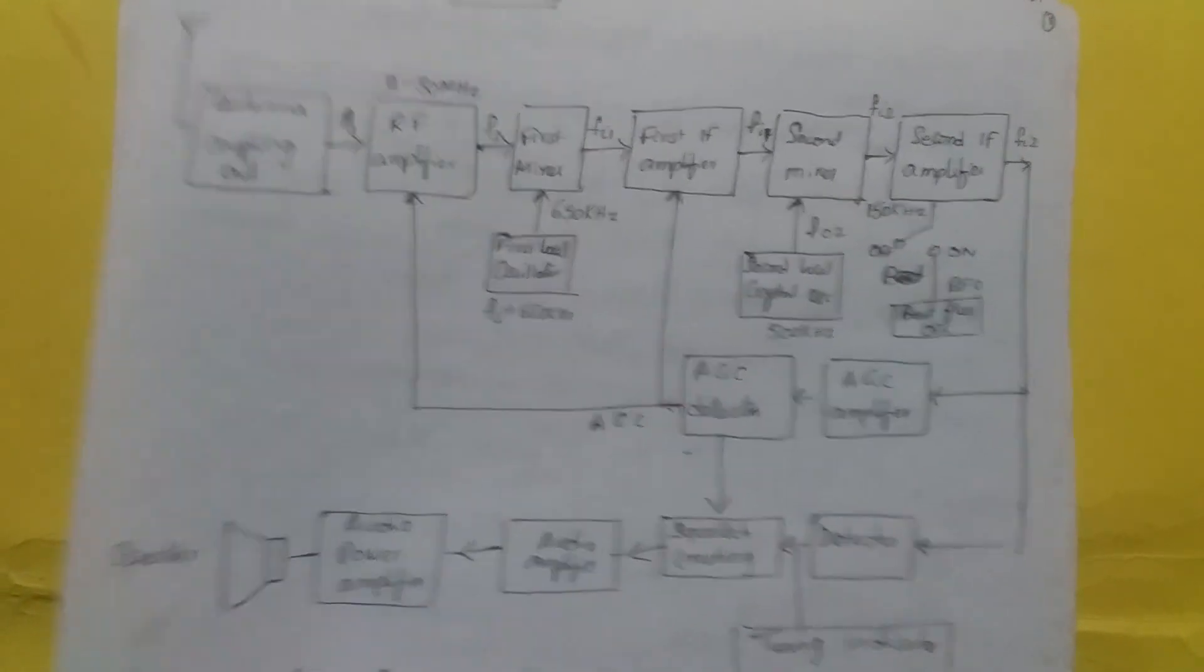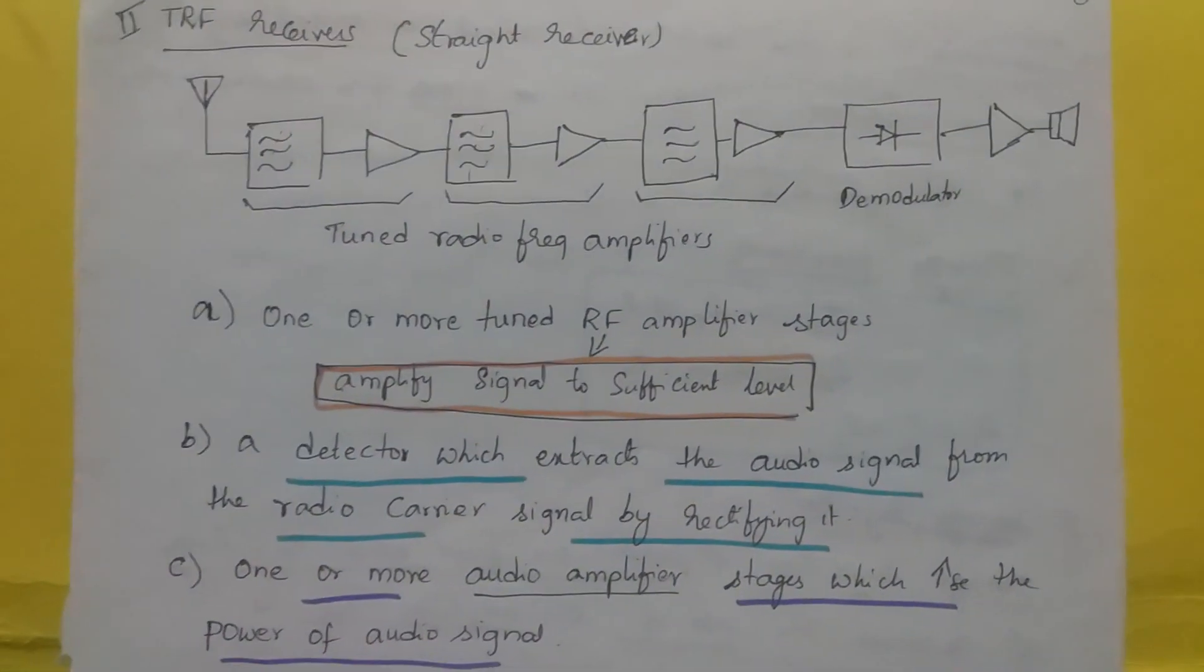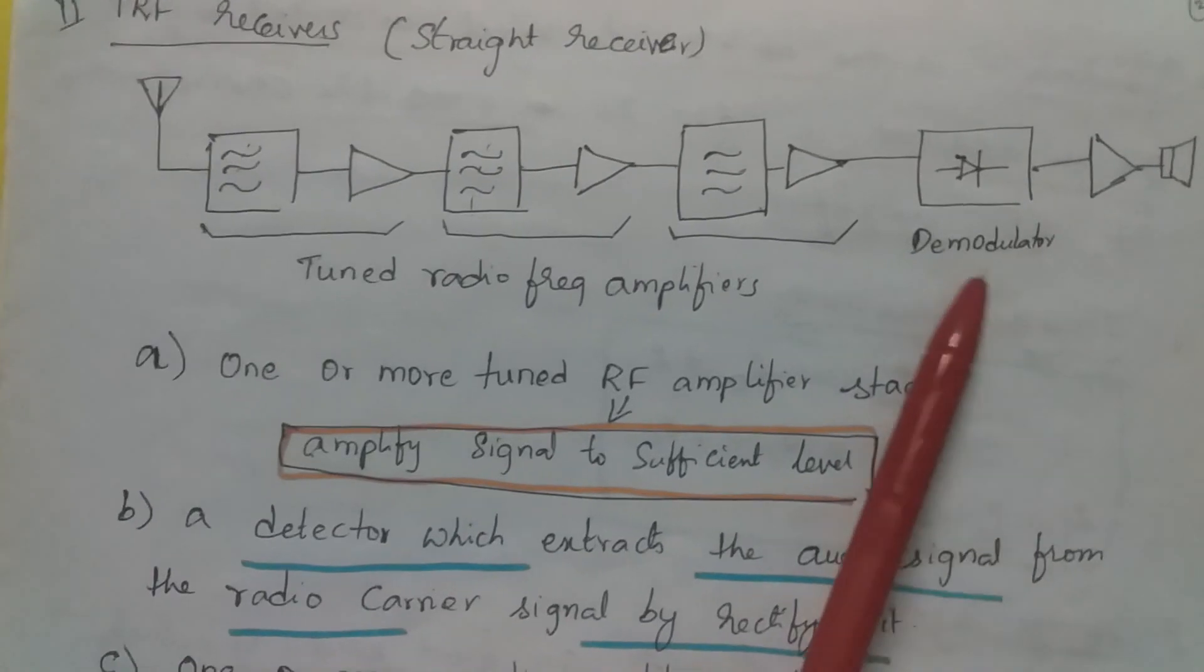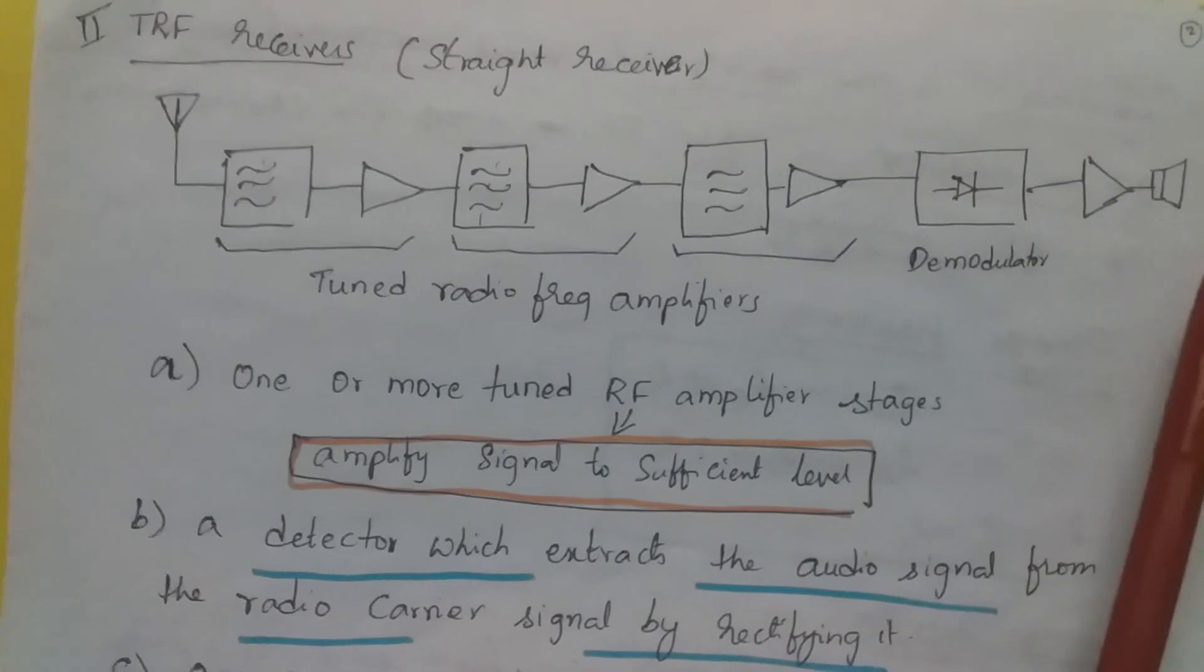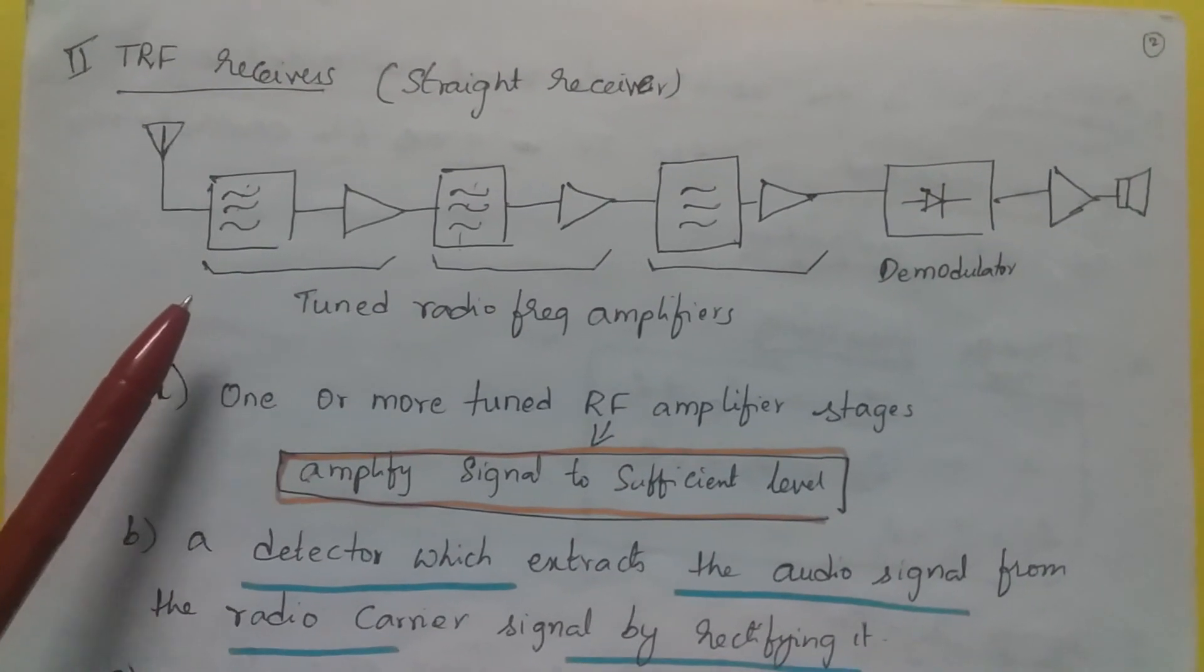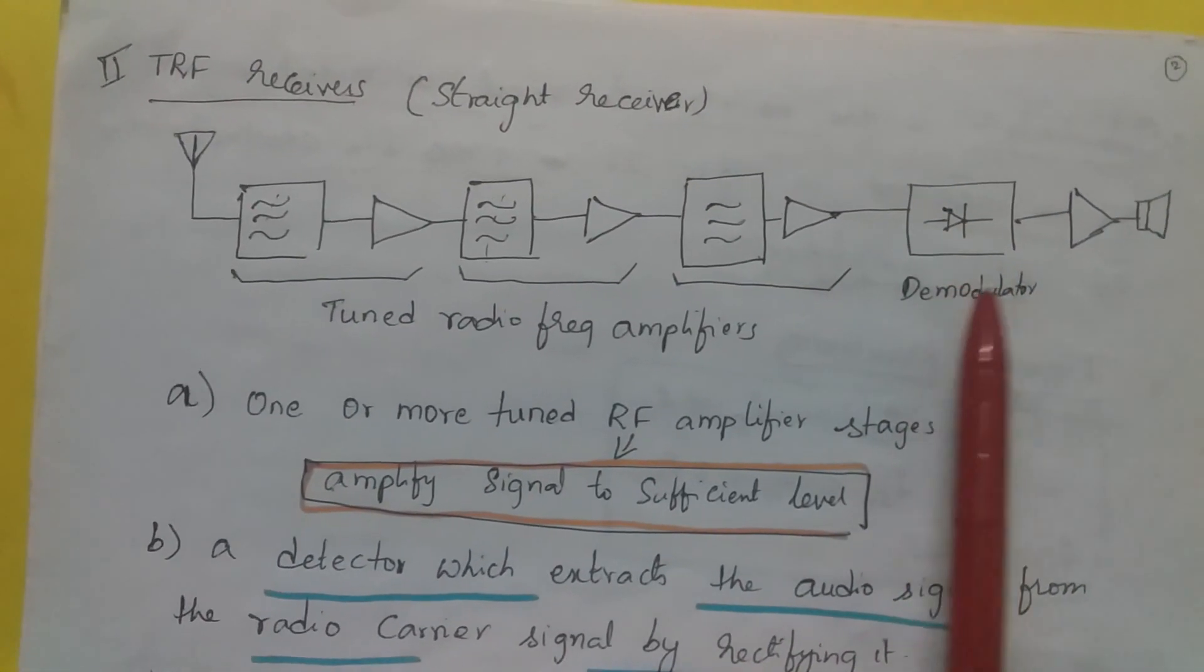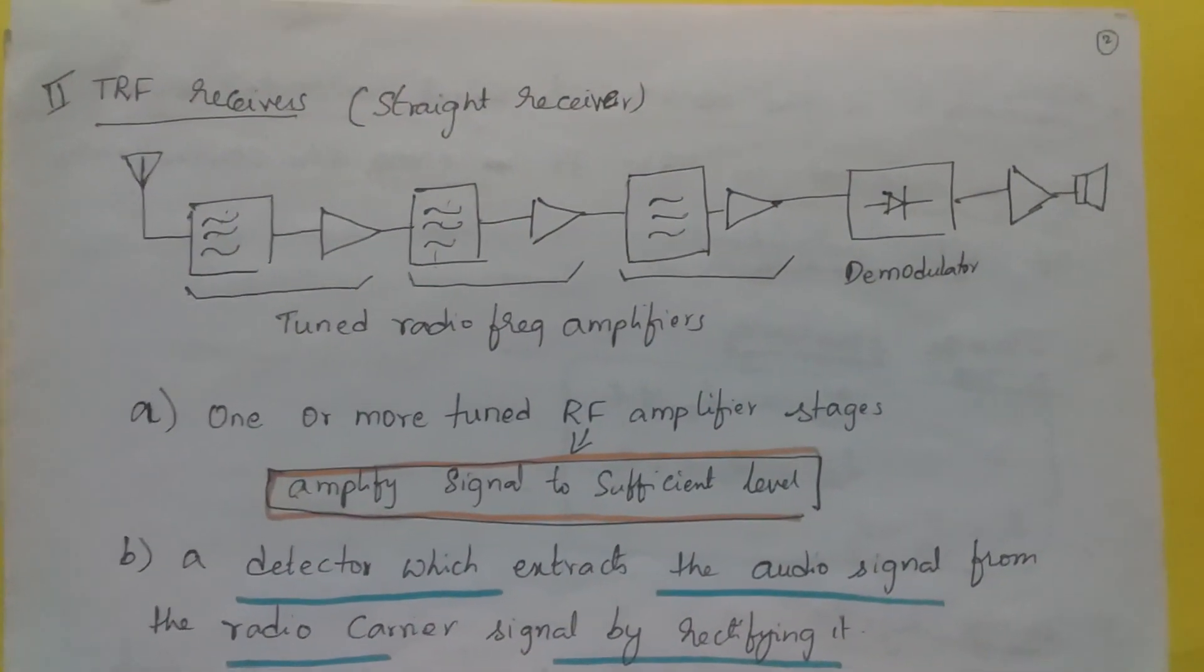Now let's discuss the first receiver which is called straight receiver or TRF receiver. In TRF receiver, we use a number of tuned RF amplifiers and one demodulator which is a diode demodulator, and an amplifier passed to the loudspeaker. There are one or more RF tuned amplifier stages that amplify signal to suitable level. A detector extracts the audio signal from the radio carrier signal by rectifying it, and one or more audio amplifier stages increase the power of audio signal.